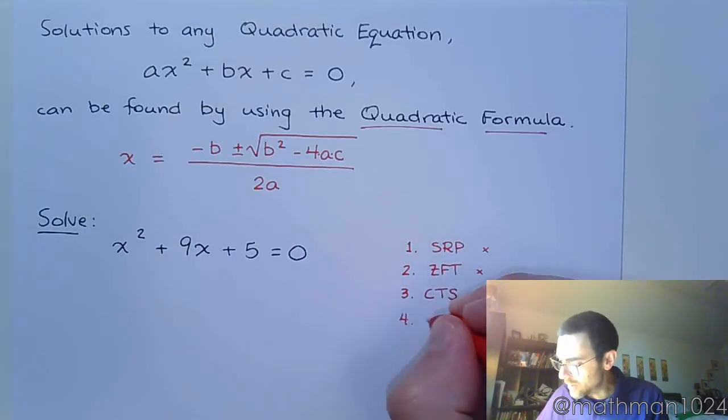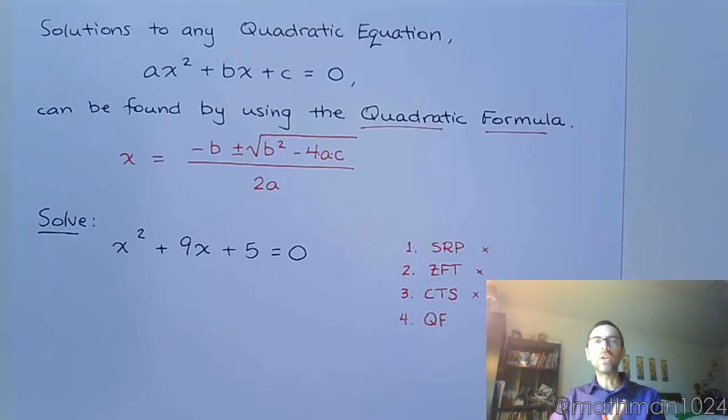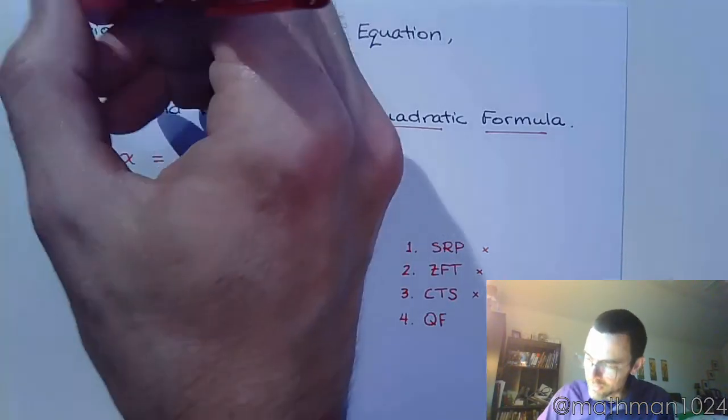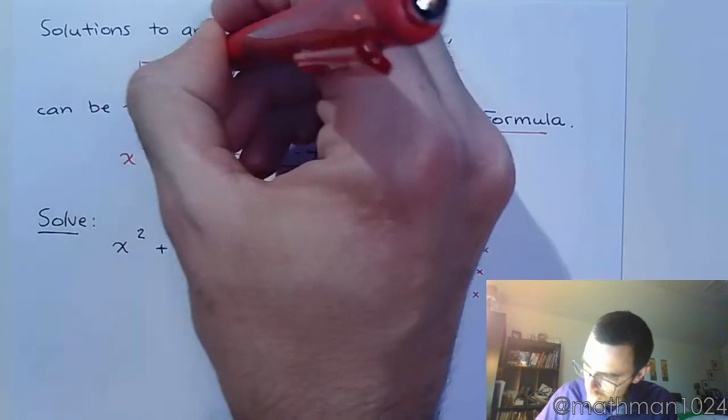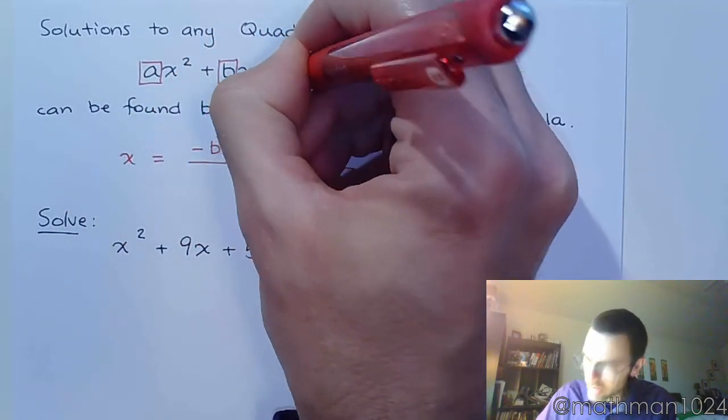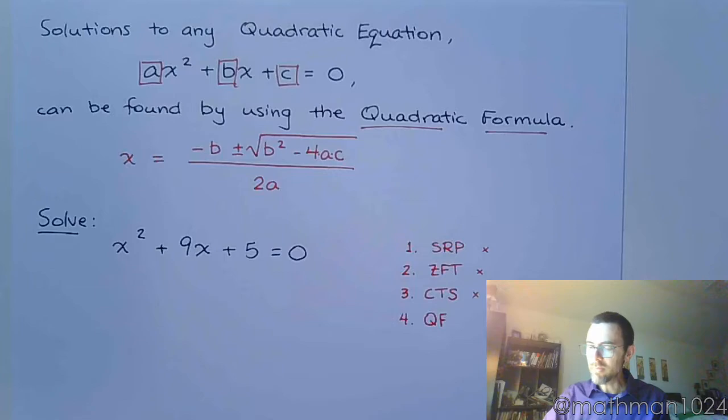So we land on the method of last resort. Not the first thing you do, but when nothing else works out nicely, and that's the quadratic formula. So before you use the quadratic formula, you have to first identify what these values are. What's a, b, and c?